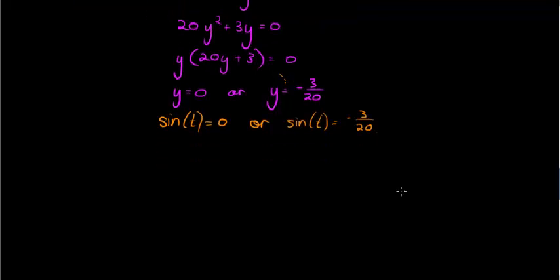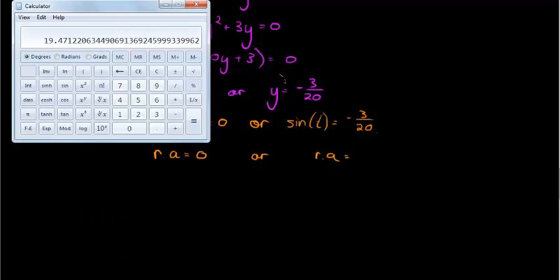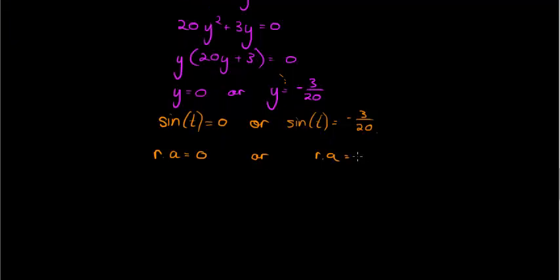And with that, we have that our reference angle is then either, for 0, sin t's reference angle would be 0, or for this one, the reference angle, I'll have to calculate that with my calculator. So I have 3 over 20 with a negative. It gives me negative 0.15. The inverse of sin for that is negative 8.62.